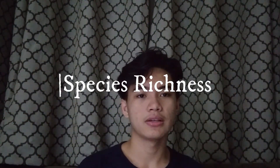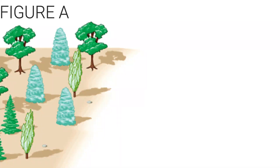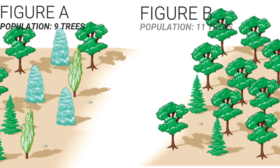Now we will talk about ways to measure biodiversity. There are two ways. The first is species richness — biodiversity can be measured in relation to the number of species in a given area. It doesn't take account of how the species are distributed, but only counts the total number of species. For example, Figure A has nine trees with evenly distributed different types, while Figure B has eleven trees with two species where one is more dominant. Figure B has higher biodiversity under species richness because it has a greater total population.